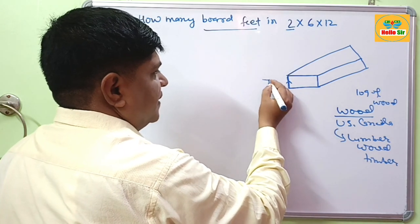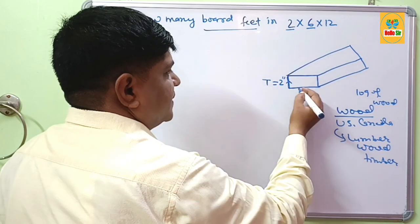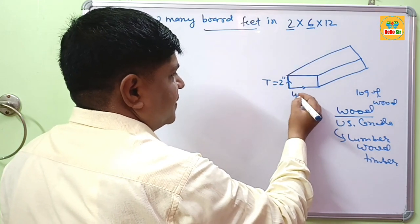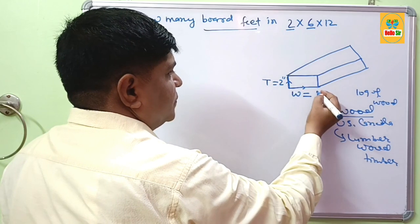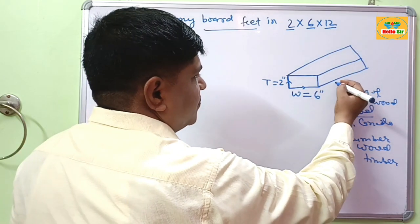This thickness is 2 inches and their width 6. This one is their width, represented by W equals 6 inches. And this dimension is always measured in wood.